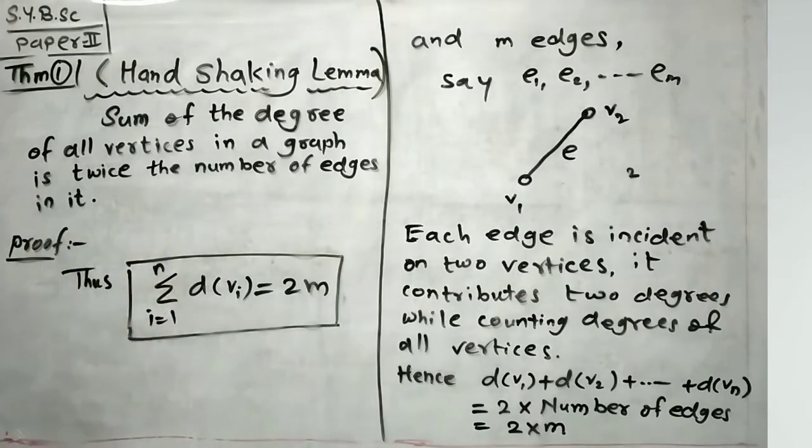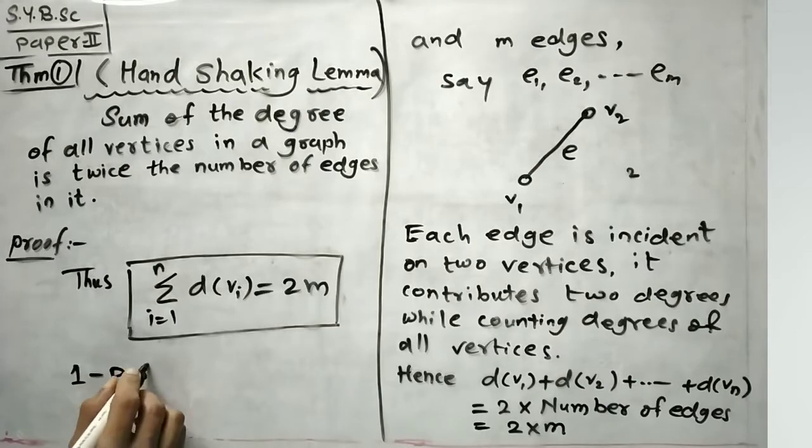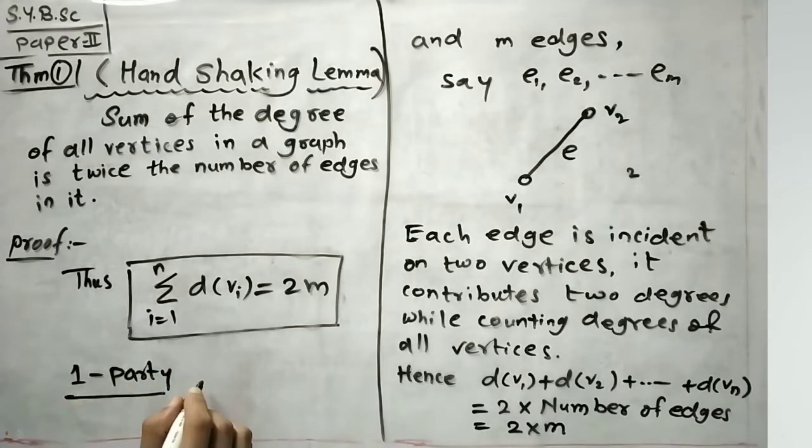Why is it called hand shaking lemma? The name follows from the fact that at a party if n handshakes occur, there will be 2n hand checks.